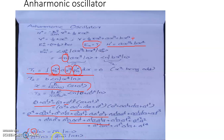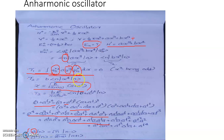The annihilation operator a acting on ket n gives root n times ket n minus 1, and the creation operator a-dagger acting on ket n gives root n plus 1 times ket n plus 1. When we consider the term a to the power 4 acting on ket n, the resulting ket is proportional to ket n minus 4. Taking the scalar product of bra n with ket n minus 4 gives the Kronecker delta of n and n minus 4, which equals zero since n cannot equal n minus 4.